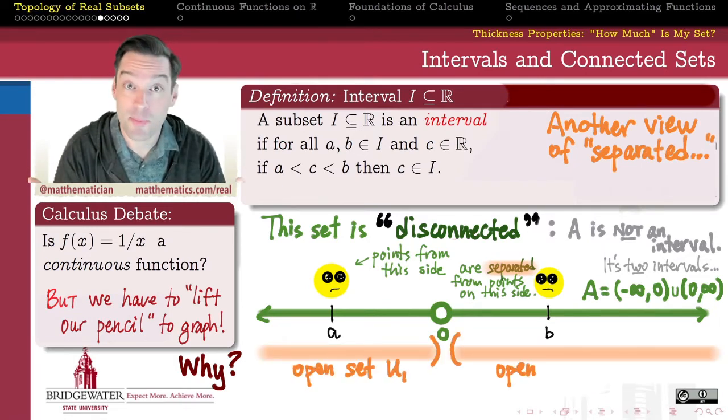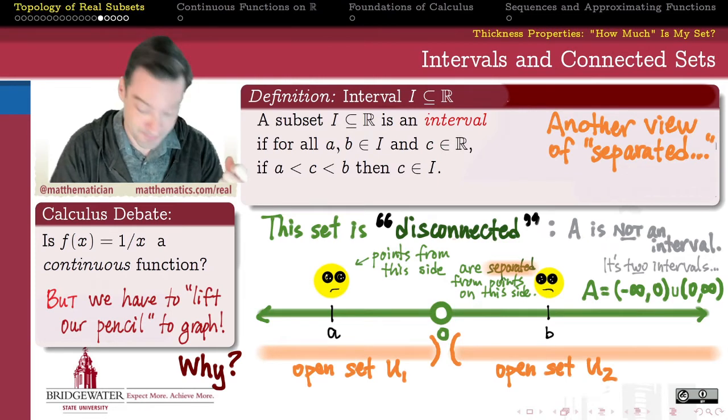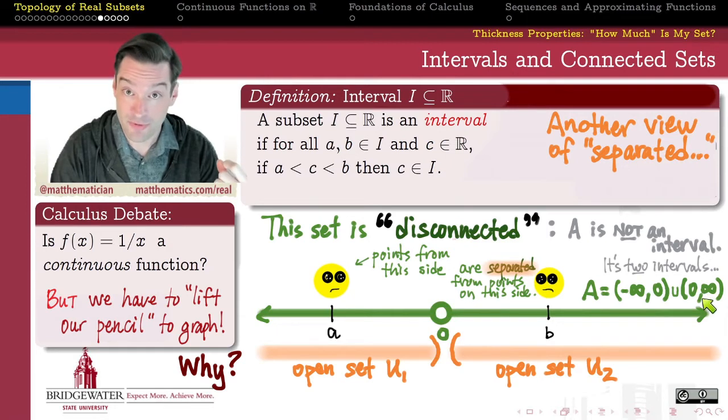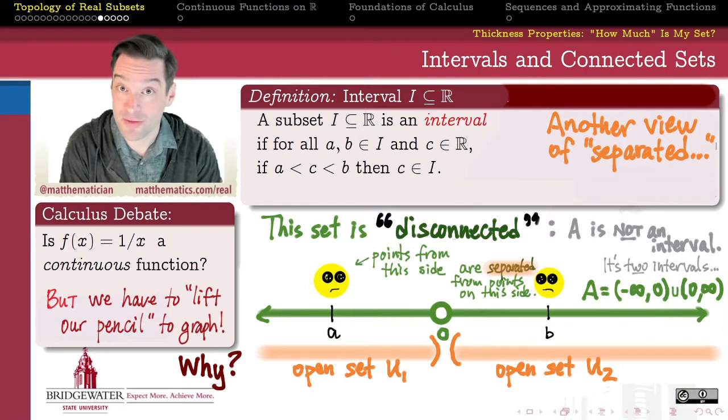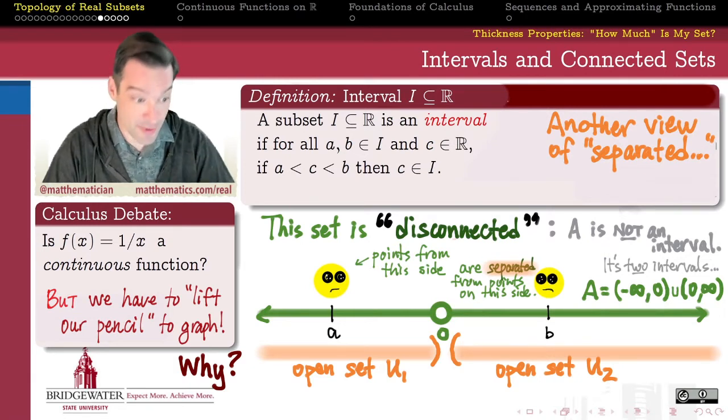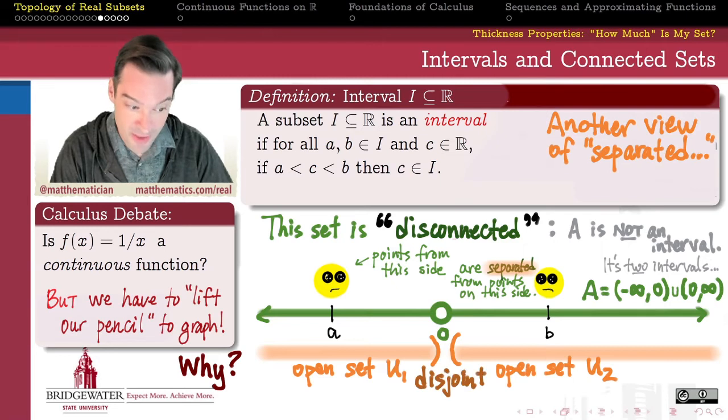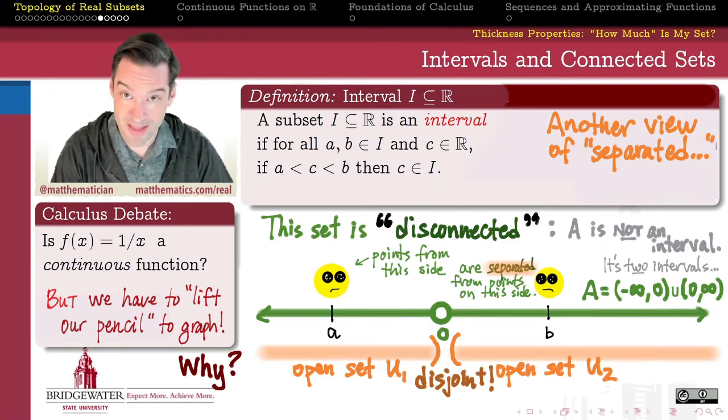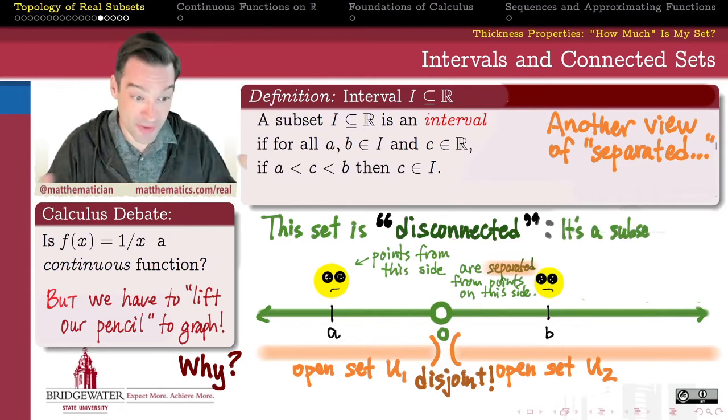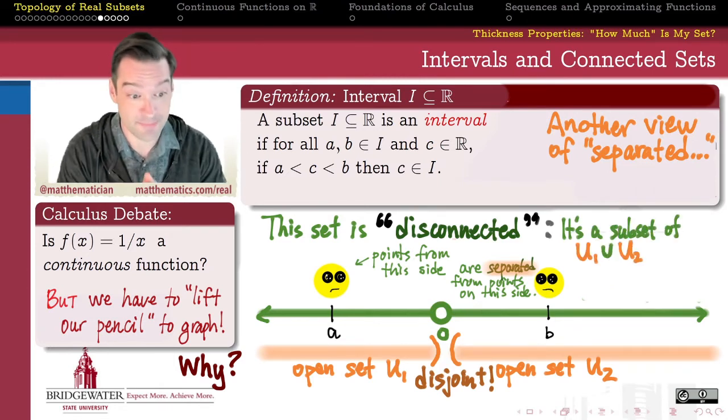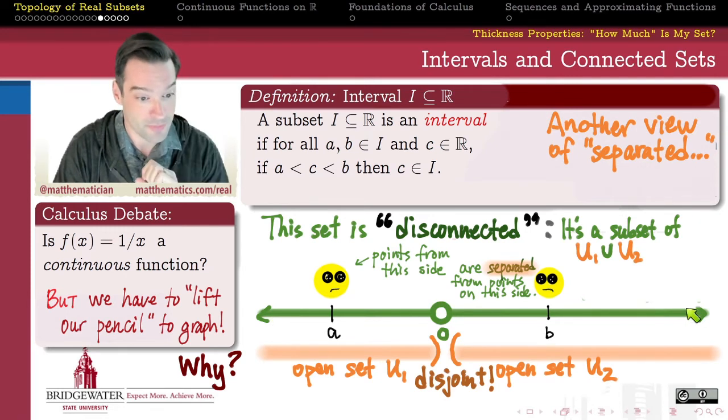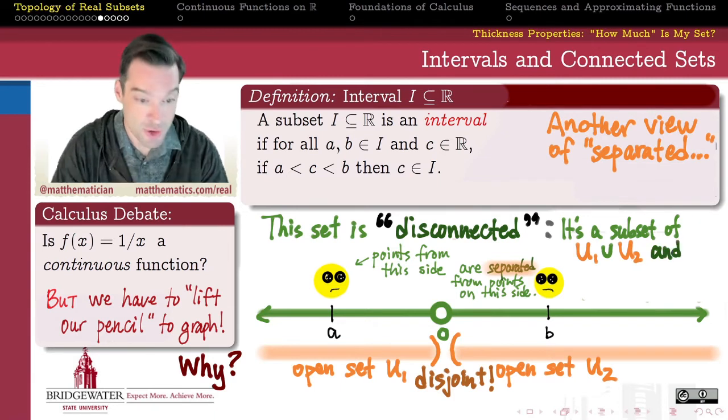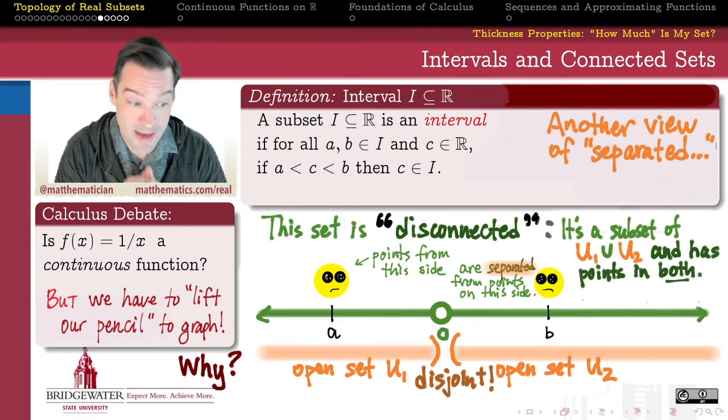But those two open sets are somehow separated from one another. They separate the points in one from the points in the other. And the reason that they do that is that these two open sets minus infinity to zero and zero to infinity have no points in common. They not only do I have two open sets that together describe my entire set A, these open sets are disjoint from one another. And so what we get is what I'm going to call a disjoint open cover of my set.